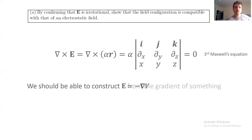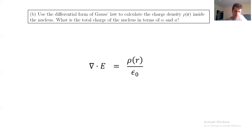The second part of this exercise was about applying the first Maxwell's equation, also known as the Gauss law, to calculate the charge density inside the nucleus. So the only thing we have to do is compute the divergence of E, which is rho over epsilon naught.